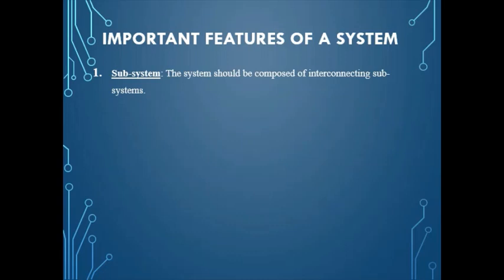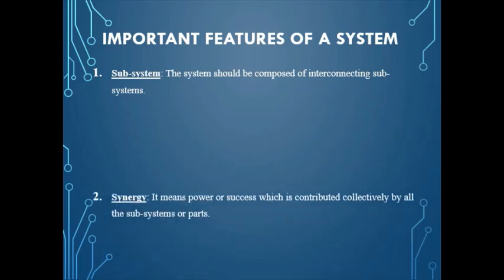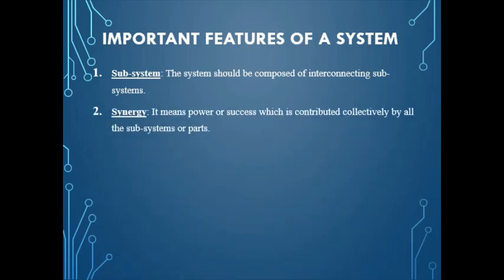The important features of a system: Number 1 — Subsystem, which is a protected part of a system. Number 2 — Synergy, which means power or success contributed collectively by all the subsystems and parts.